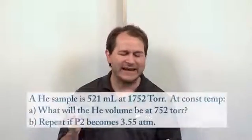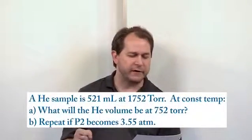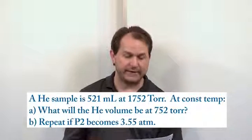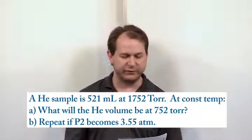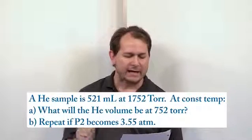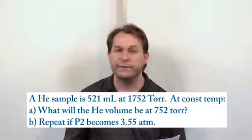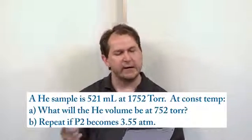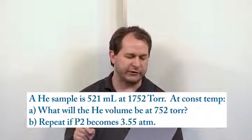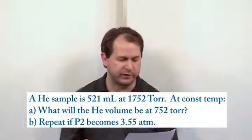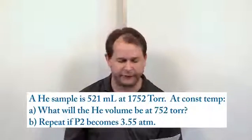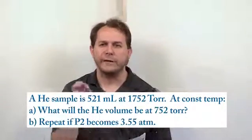The first problem says a helium sample is 521 milliliters at 1,752 torr of pressure. At constant temperature, what will the helium volume be at 752 torr? That's part A. Part B says repeat the calculation if P2, the final pressure, is 3.55 atmospheres. For now, let's just forget about part B and work on part A.